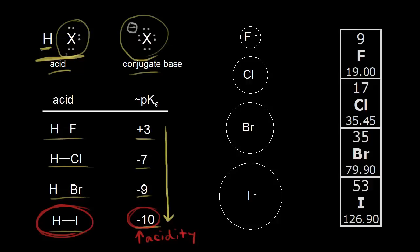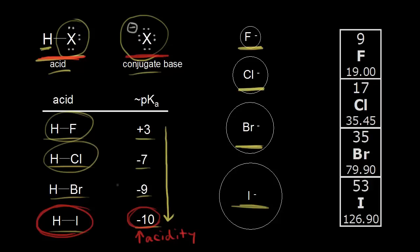If hydroiodic acid is our strongest acid, its conjugate base must be the most stable. The conjugate base to HI is the iodide anion, I minus. The conjugate bases are: fluoride anion for HF, chloride anion for HCl, bromide anion for HBr, and iodide anion for HI. The iodide anion must be the most stable because HI is our strongest acid.